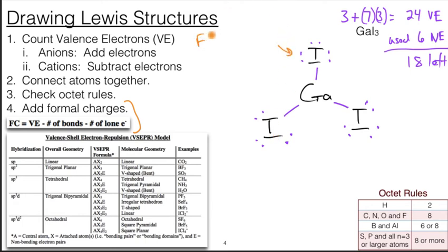Formal charge calculation. Valence electron count, well we already saw that, seven for each iodine. There's one bond and there are six lone electrons.